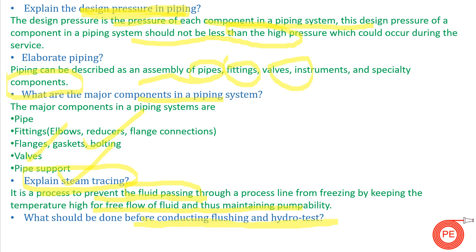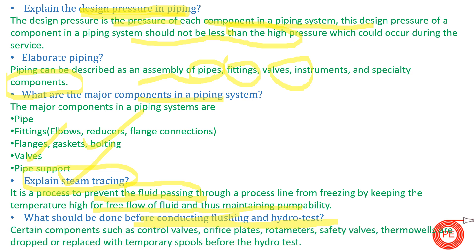Next question: what should be done before conducting flushing and hydro test? Certain components such as control valves, orifice plates, rotameters, safety valves, and thermowells are removed, and instead temporary spools are used in their place. Tell me in the comments why these components are removed and spools are used instead.